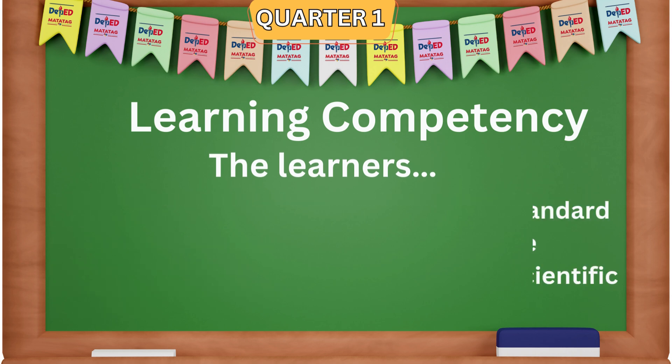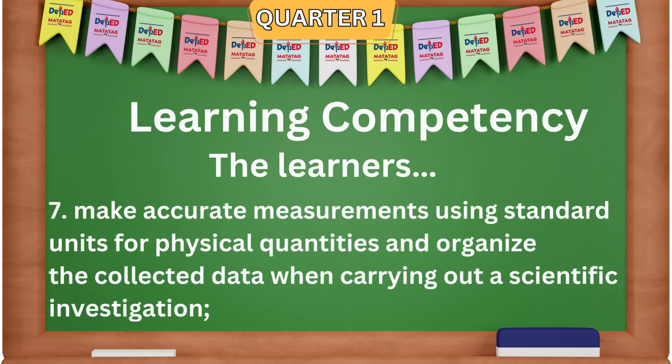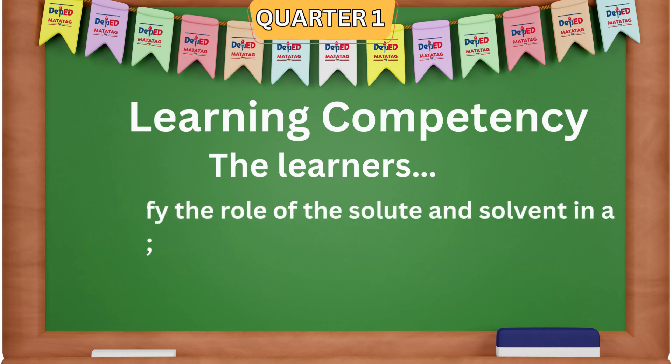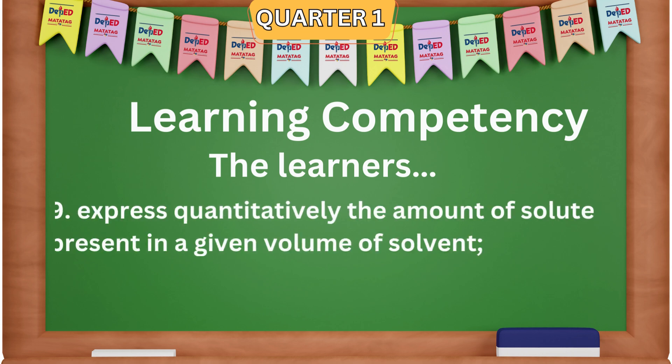Learning Competency 7: Make accurate measurements using standard units for physical quantities and organize the collected data when carrying out a scientific investigation. Learning Competency 8: Identify the role of the solute and solvent in a solution. Learning Competency 9: Express quantitatively the amount of solute present in a given volume of solvent.